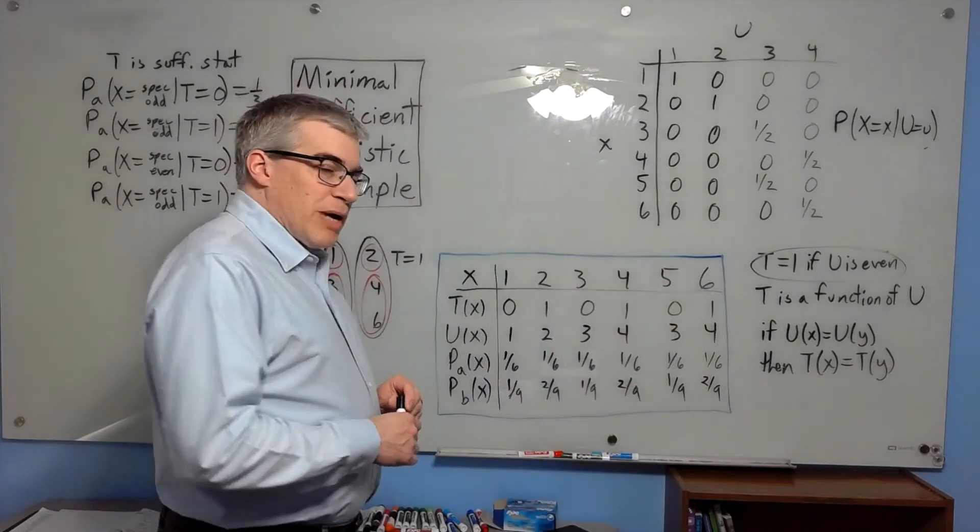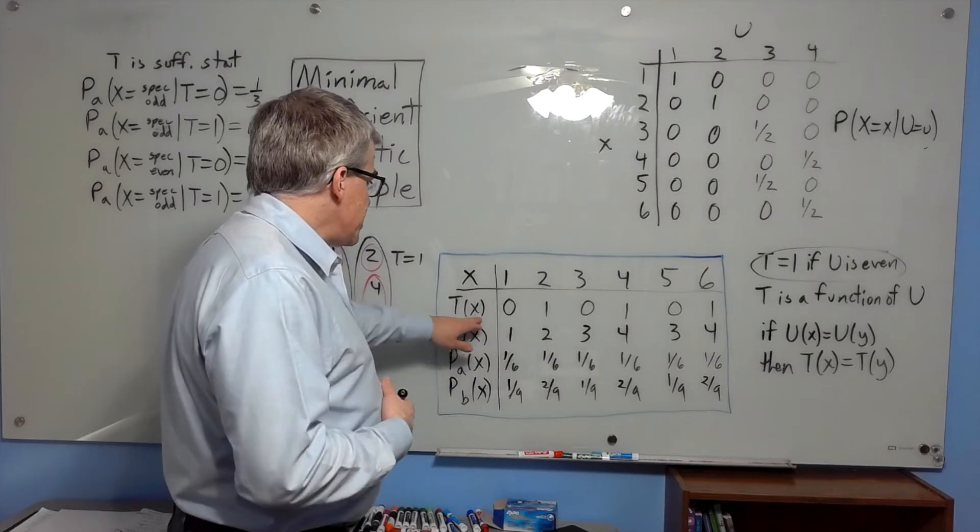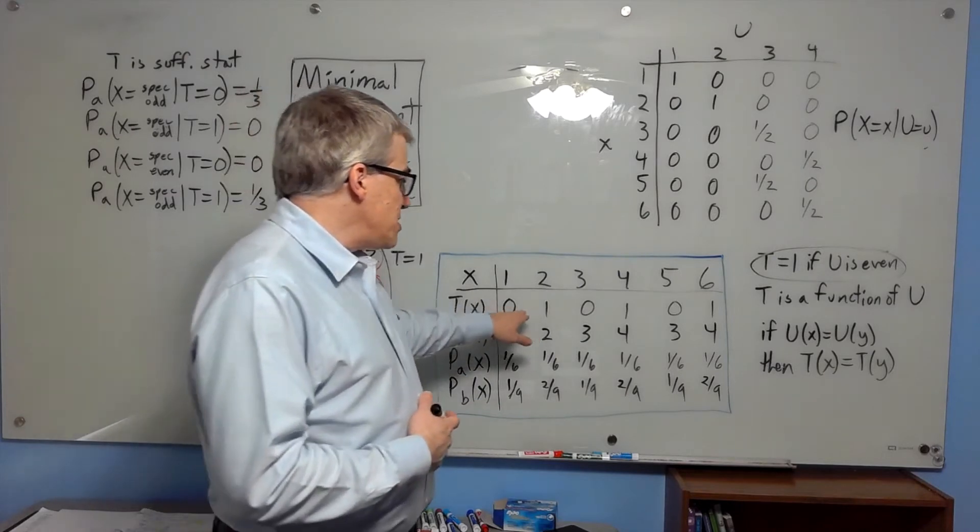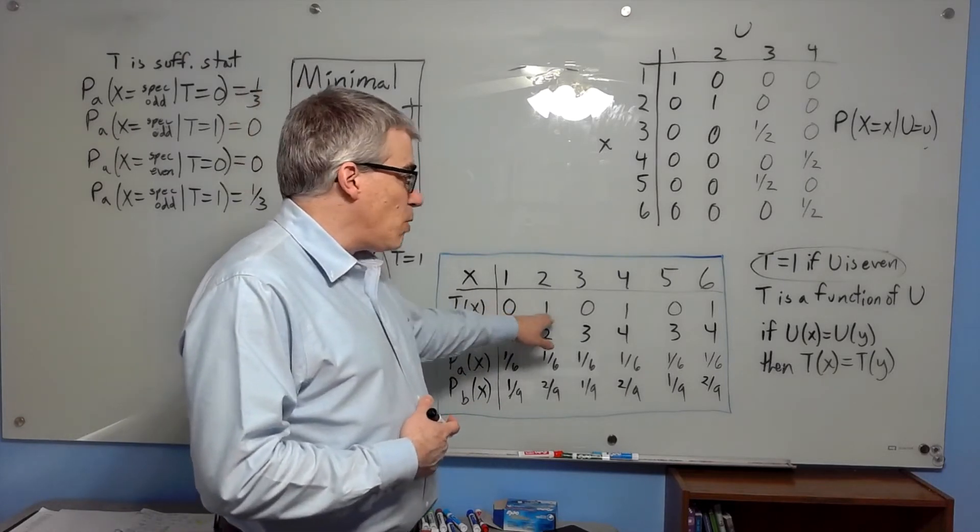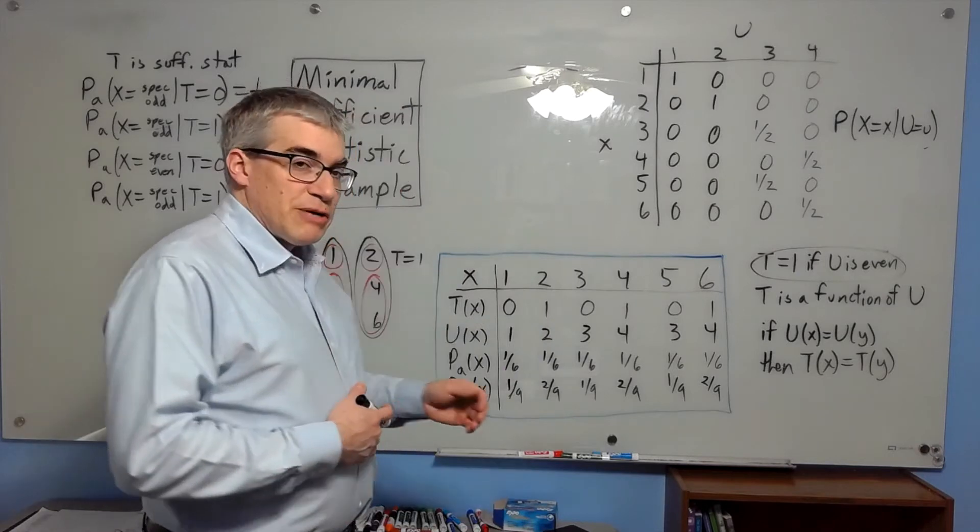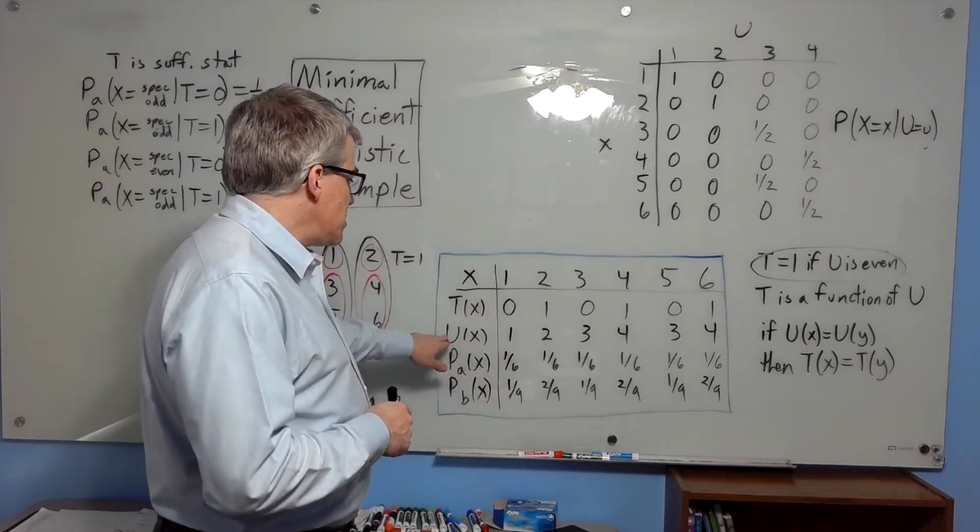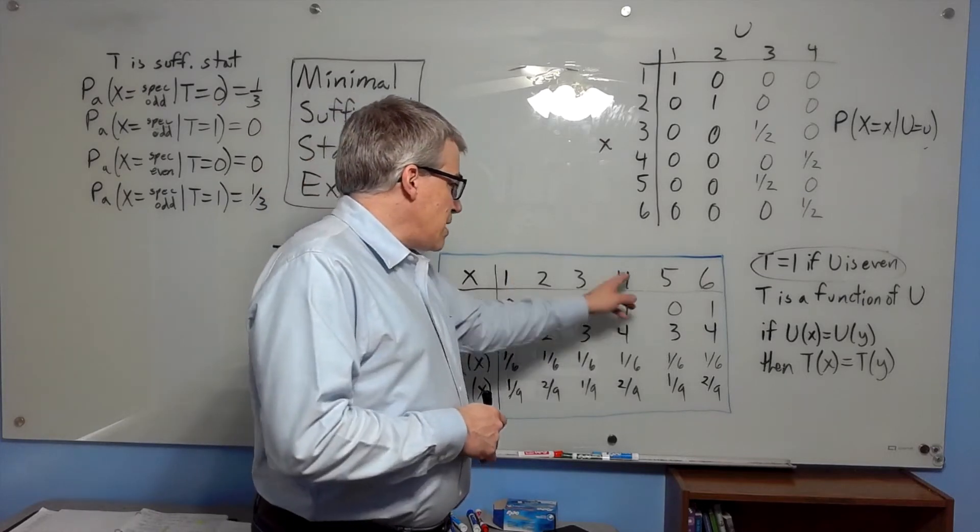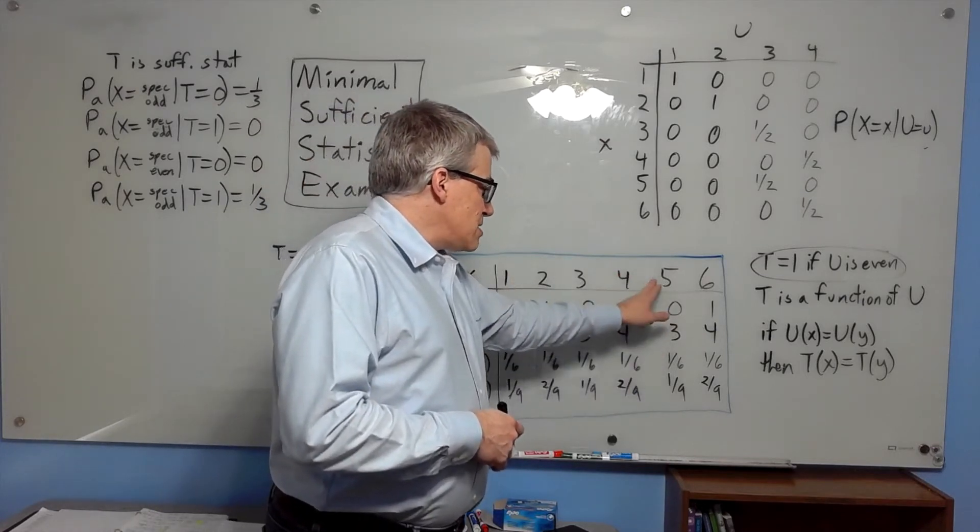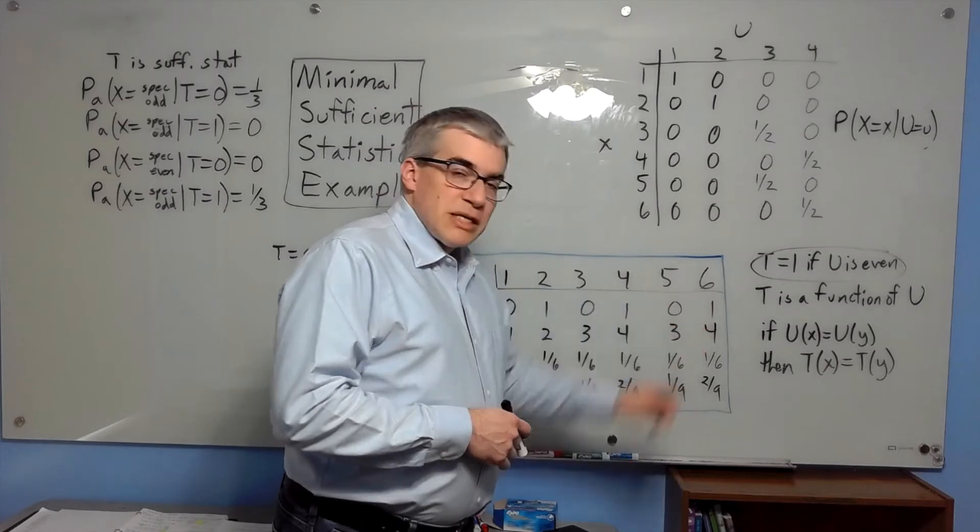We're going to compare a couple of statistics. The first statistic, t, is simply going to be zero if x is odd and one if x is even. This will turn out to be the minimal sufficient statistic. The second statistic is one, two, three, or four when x is one through four, but when x is five we'll say it's three, and when x is six we'll say it's four.